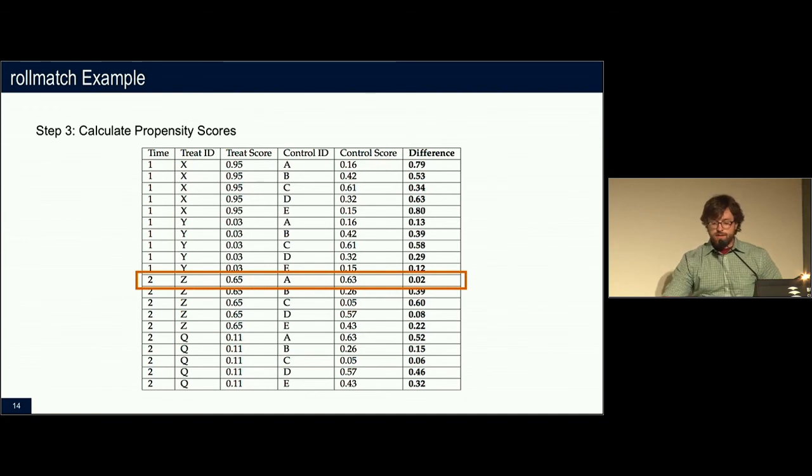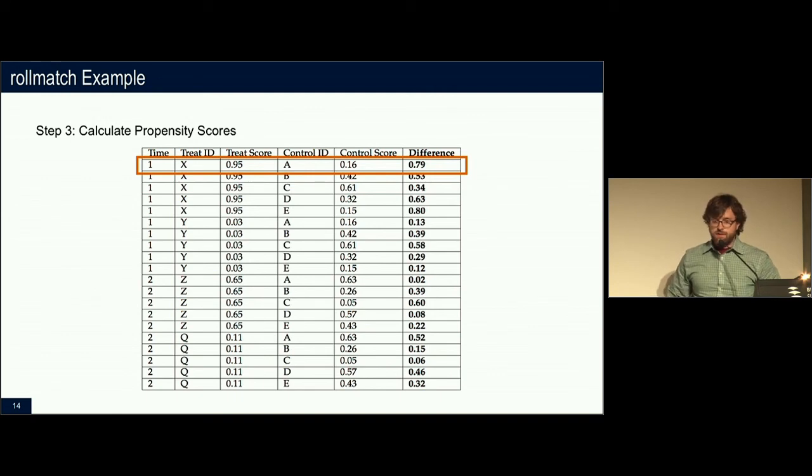A couple of good examples to point out is this one here where I compared Z to A. Their probability of being selected into the study is almost the same. So they would probably get matched with the next step. But a different example would be this first line item where their scores were completely different. So we would hope that X and A would never be matched because A has a very low likelihood of ever receiving the treatment versus X in time period one was almost certainly guaranteed to get the treatment.